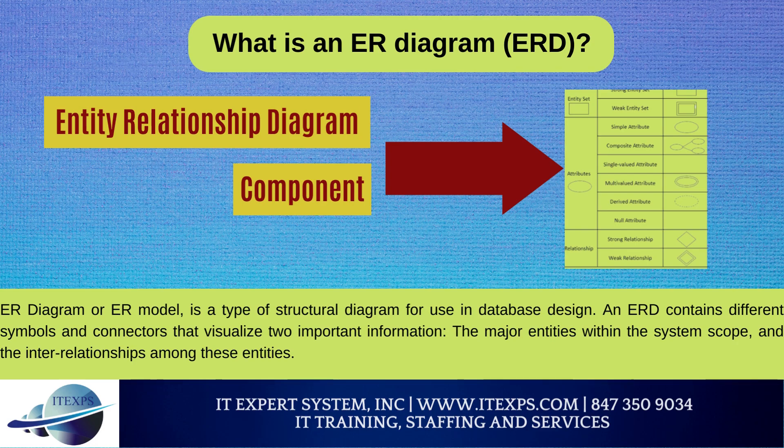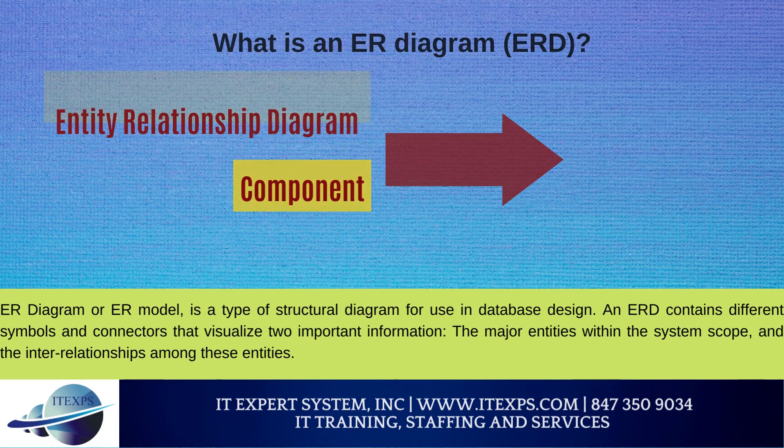Relationship is about how these entities relate to each other within the system. In a typical ER design, you can find symbols such as rounded rectangles and connectors with different styles at their ends that depict the entities, their attributes, and inter-relationships. While ER models are mostly developed for designing relational databases — both for concept visualization and physical database design — there are still other situations when ER diagrams can help.